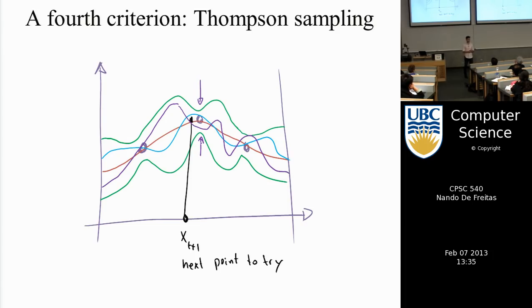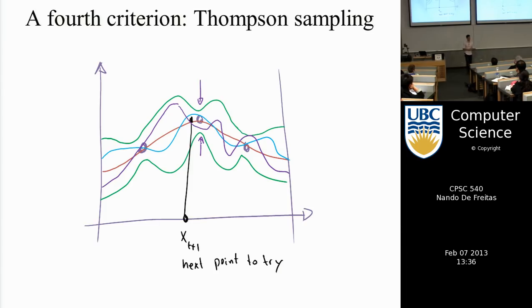Thompson sampling is used exactly this way at Google Analytics for making decisions. In the context of Gaussian processes, you draw a sample from the posterior and pick its maximum.